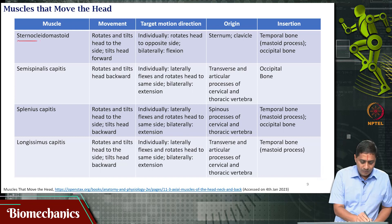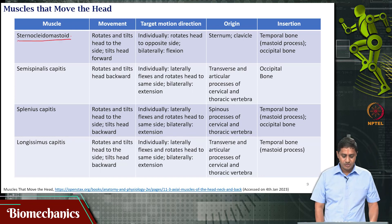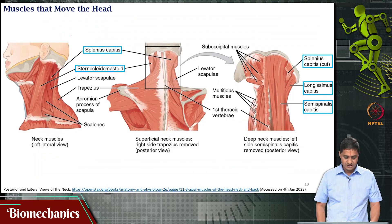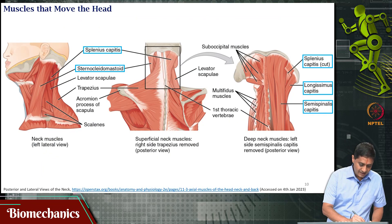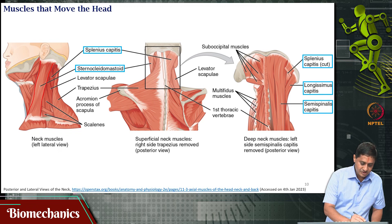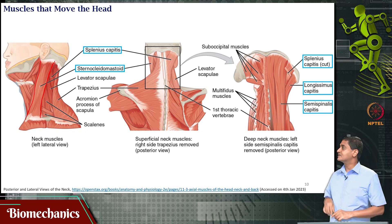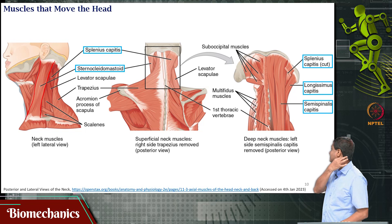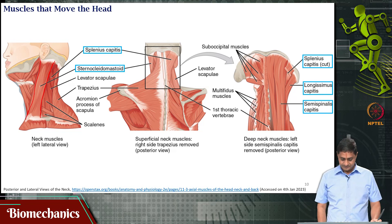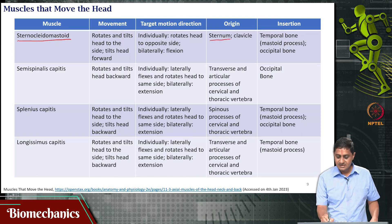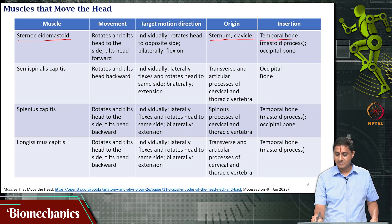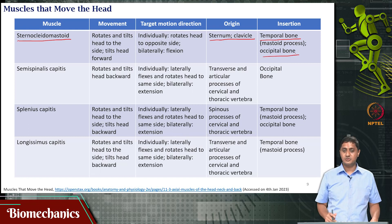One muscle is called the sternocleidomastoid. Its origin is at the sternum or clavicle, and its insertion is the mastoid process in the temporal bone and the occipital bone — just below and at the level of the ear.